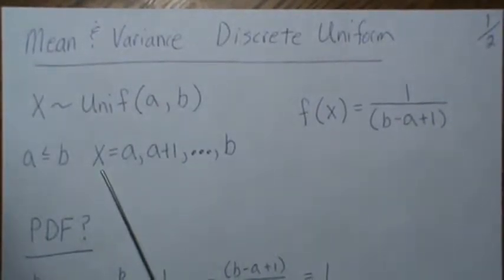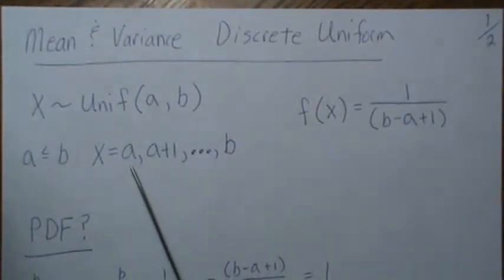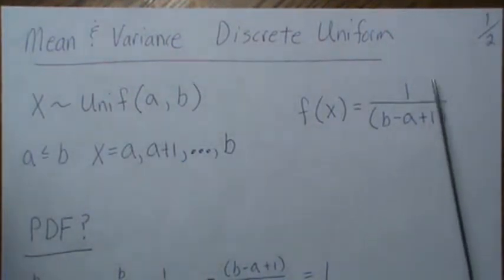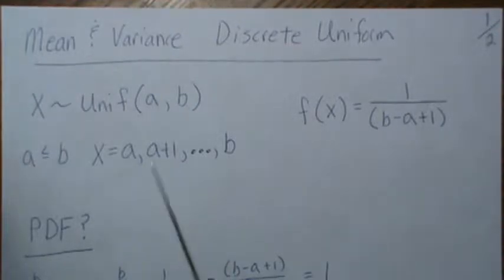That means X can take on integers from A to B, however many there are there. The density for it is 1 over how many there are, which is B minus A plus 1.